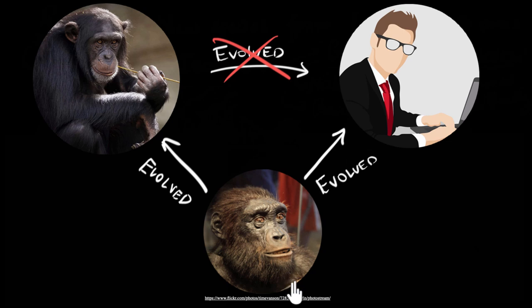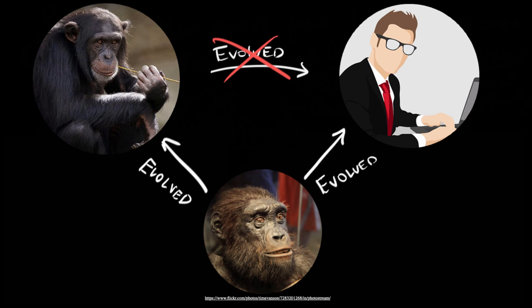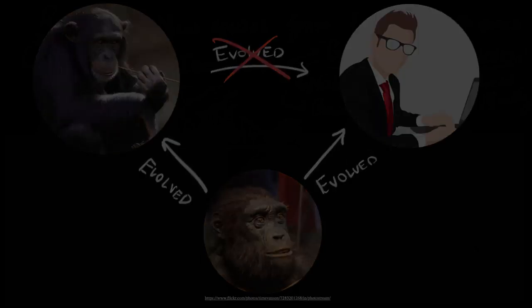These guys were neither apes nor humans — and this is just drawn by an artist, so we don't know exactly what they look like. But this raises a very big question: how do new species like these evolve from an old species? That's exactly what we're going to talk about in this video — a process called speciation.